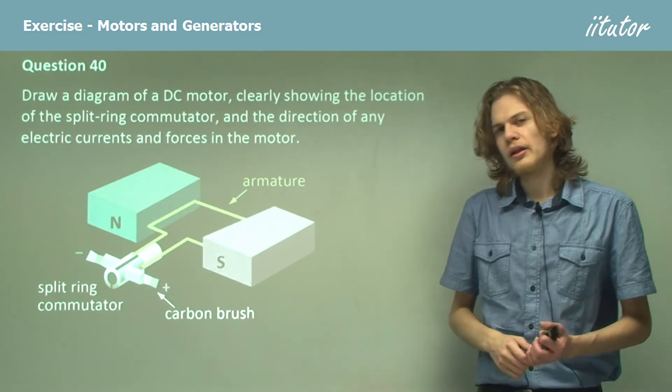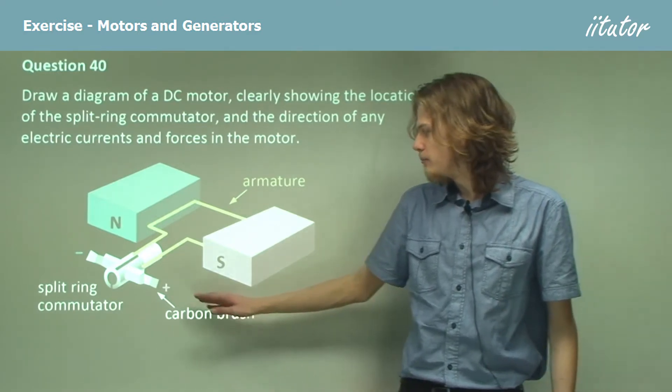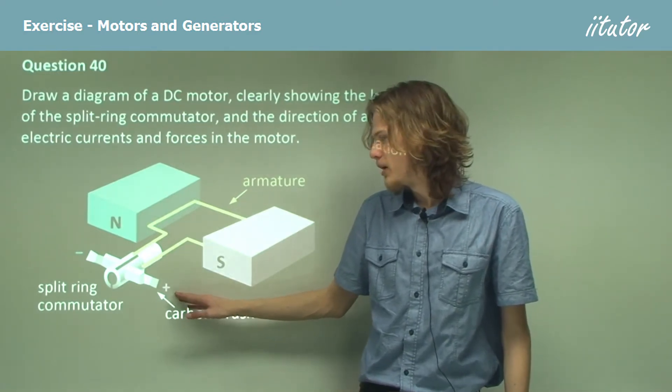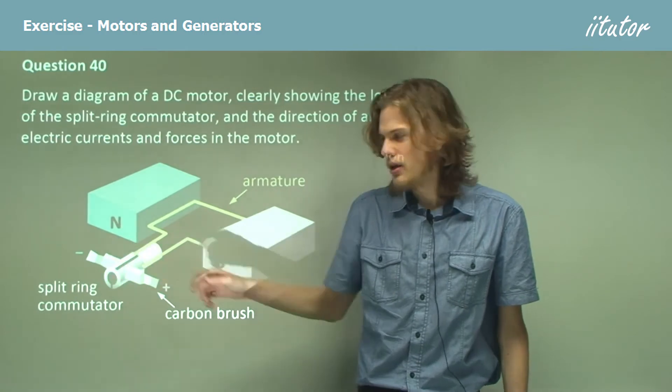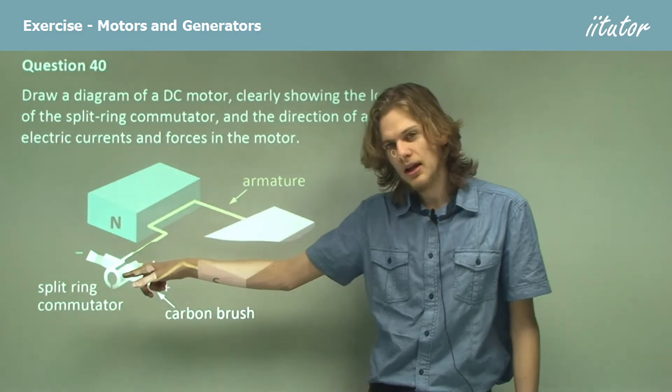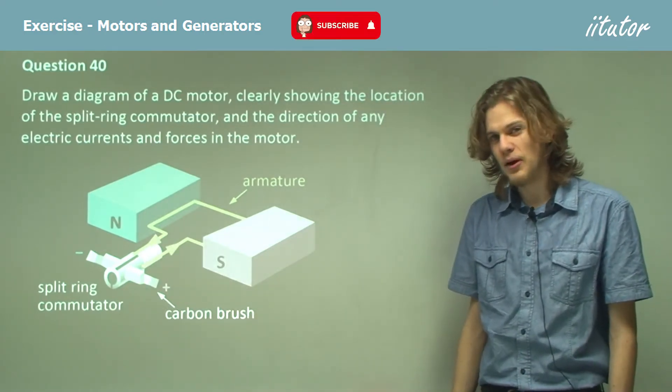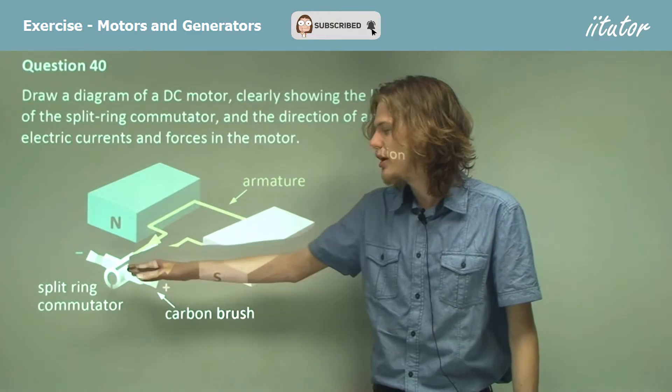Now which direction will the electric current flow in? We have a positive carbon brush over here and a negative carbon brush over there. Current flows from positive around the coil to negative. So our current will be in this direction, from the positive terminal to the negative terminal.